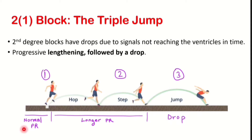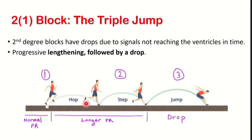During running, his stride is shorter and represents a normal PR interval, but during hopping his stride becomes longer, and finally the big jump represents the drop.